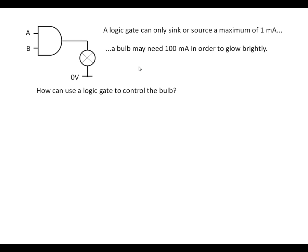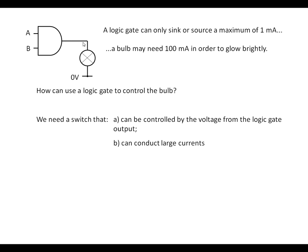So how are we going to do this? What we need is a switch. The switch has got to be voltage controlled, so 0 or 5 volts coming out of this will either switch it on or off. It's also got to be able to conduct large currents because we're going to need about 100 milliamps perhaps for this bulb.